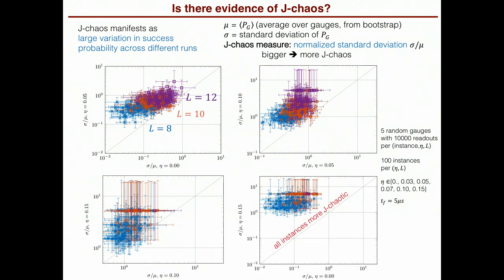And again, to contrast the two extremes, no extra added noise to noise at 0.15. In this case, every single instance, and I should have said there are 100 instances per size here, so you're looking at 300 instances, every single instance is now more J-Chaotic by this measure at 0.15 added noise relative to 0 added noise. Okay, so there definitely is strong evidence of J-Chaos here.